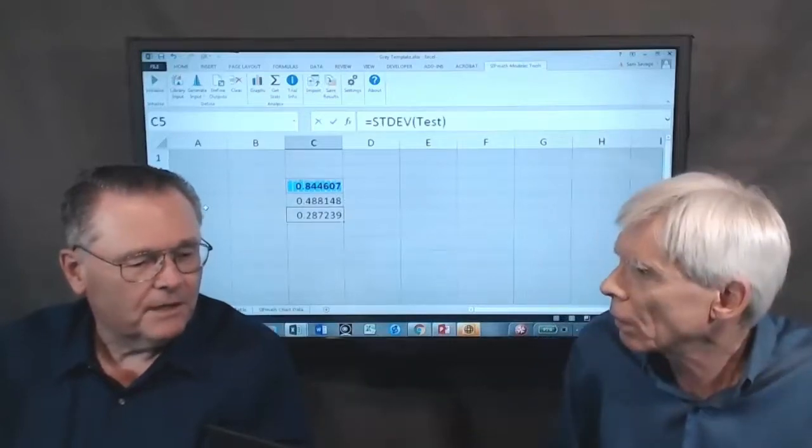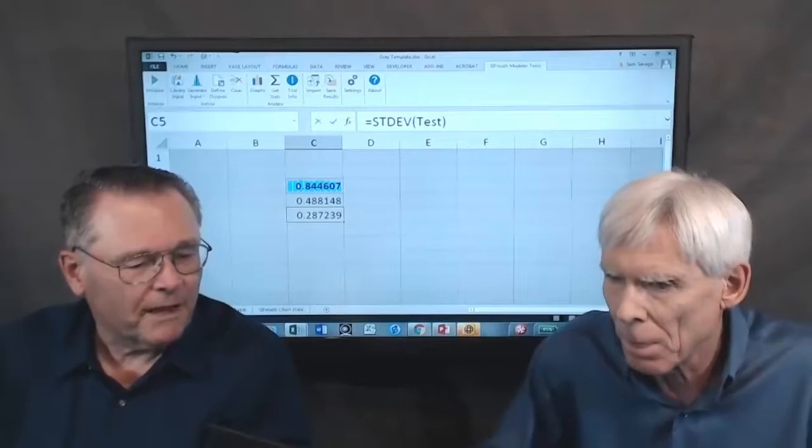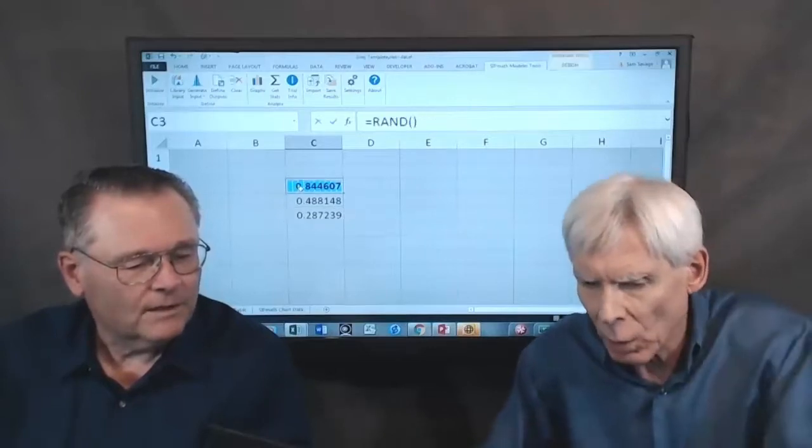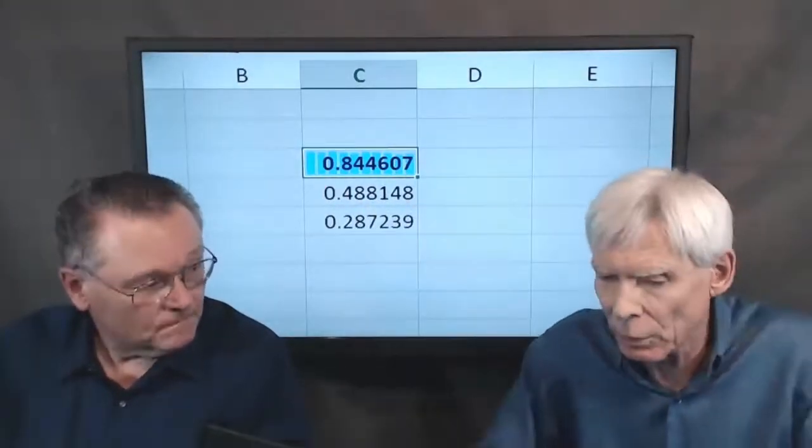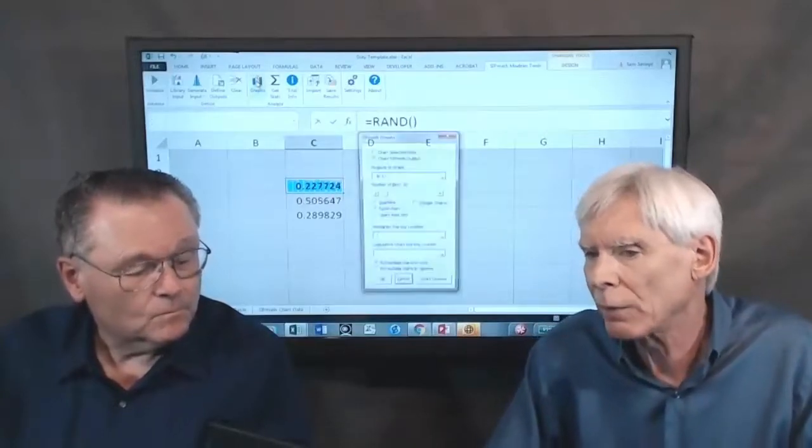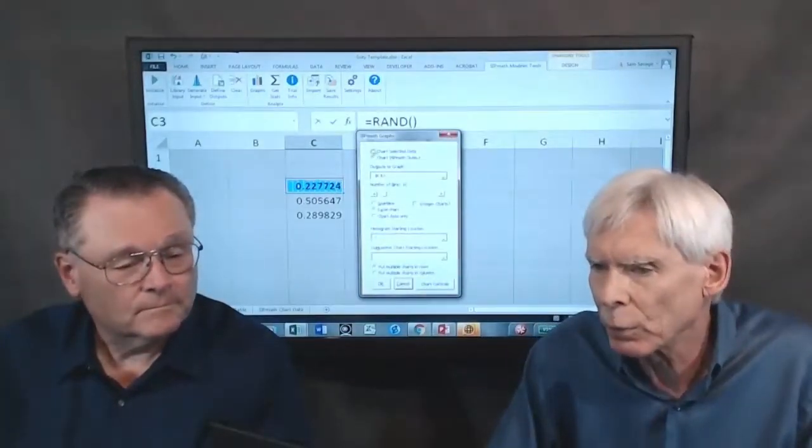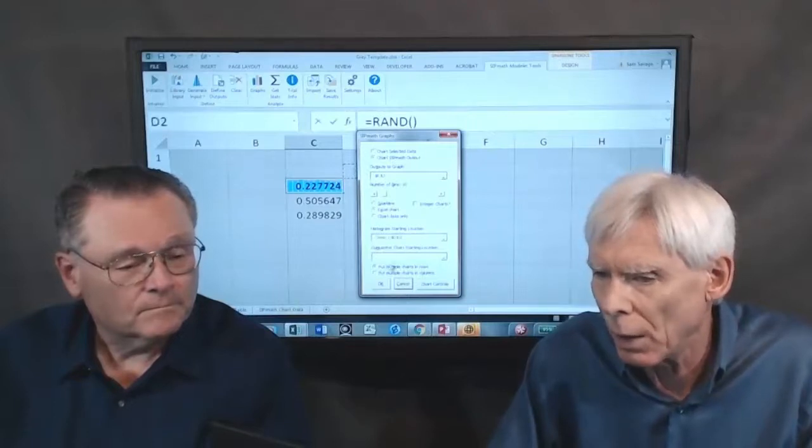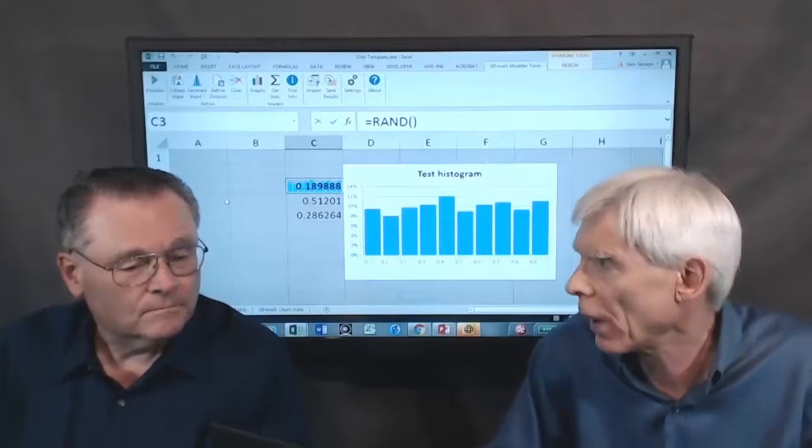But this cell here on C3, it's got something in the background. What's that? Well, that's called a sparkline graph. And it automatically created a little histogram of those thousand trials there. I can blow that up to a big graph by clicking on the graphs button. And let's put a full size histogram, say, right there. So now that's a full size histogram of a thousand trials.